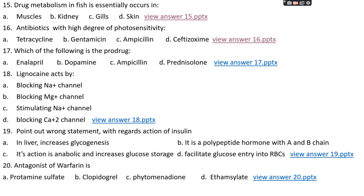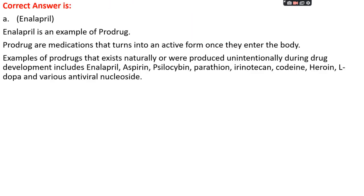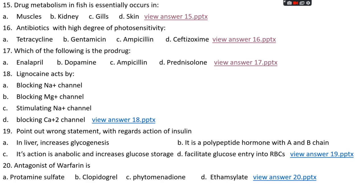Question number seventeen: which of the following is a prodrug? Option A: enalapril, option B: dopamine, option C: ampicillin, or option D: prednisolone. The right answer is option A, enalapril. Enalapril is an example of a prodrug. Prodrugs are drugs that turn into an active form once they enter the body. Examples include enalapril, aspirin, psilocybin, terathione, irinotecan, codeine, heroin, allopurinol, and various antiviral nucleosides.